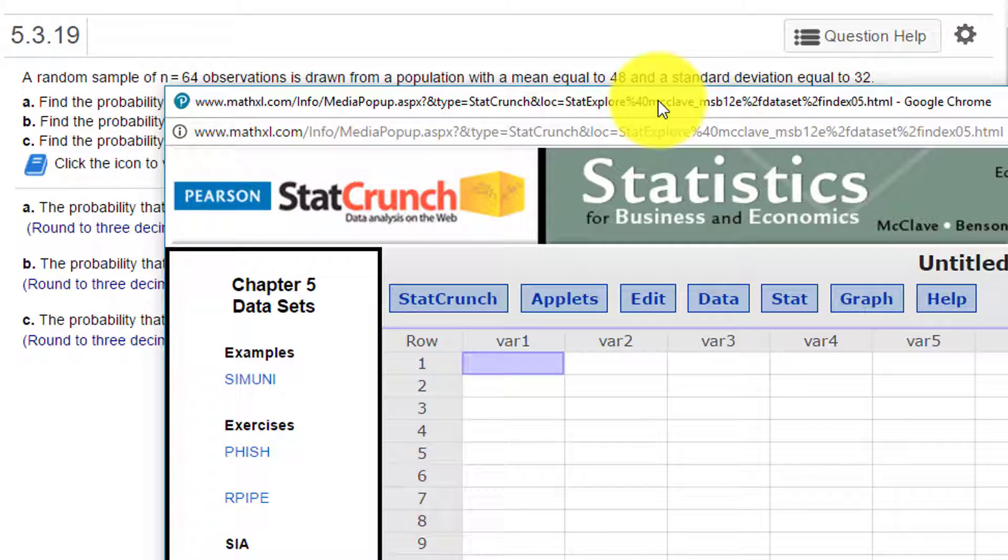What I'm going to do is go ahead and do all of this inside StatCrunch. Obviously if you've got a calculator, you can calculate standard deviation of the sample by dividing 32 by the square root of 64. I'm going to click in here and I'm going to put in my N of 64 and my sigma of 32.